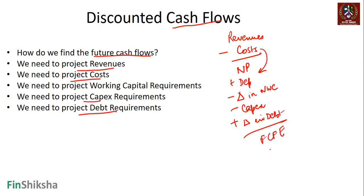If doing a FCFF calculation, we don't need the debt change. We make a small adjustment to use EBIT instead of net profit. Practically, the most important crux of this discussion is these five steps: revenues, costs, working capital requirements, capex requirements, and debt requirements for any given company.